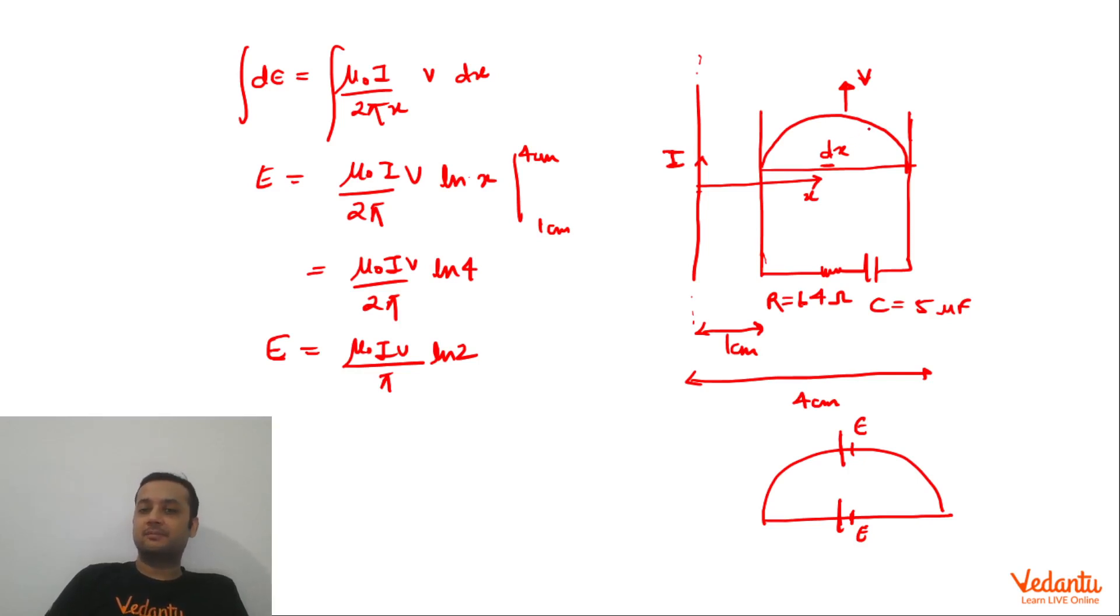In this case we have to find the maximum current and the maximum charge. Maximum current that can be solved but maximum charge we will not be able to find because we will require the value of the mass and also the differential equation and the mathematics will become too difficult to handle. Also the data will become incomplete.